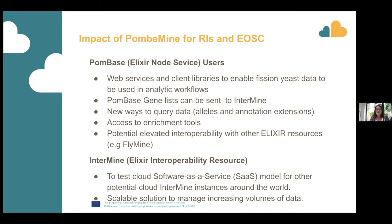To summarize the impact for PomBase, EOSC, and RIs: PomBase, which is currently an ELIXIR node service, will benefit from web services and client libraries to enable fission yeast data to be used in analytical workflows. PomBase gene lists can now be sent directly to InterMine, which provides new ways to query data — including allele information and Gene Ontology annotation extensions. It also provides direct access to enrichment tools, and especially phenotype enrichment, which is less available elsewhere.